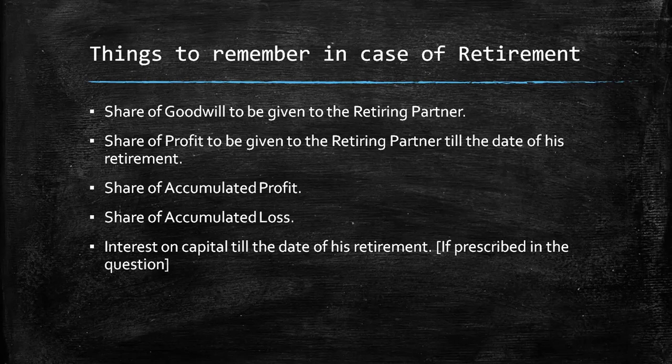Things to remember in case of retirement: unlike in case of admission, in this case of retirement you have to give the share of goodwill to the retiring partner. In chapter two, a new partner was supposed to bring in his share of goodwill, termed as premium for goodwill. But now in case of retirement, the retiring partner is supposed to get his share of goodwill.